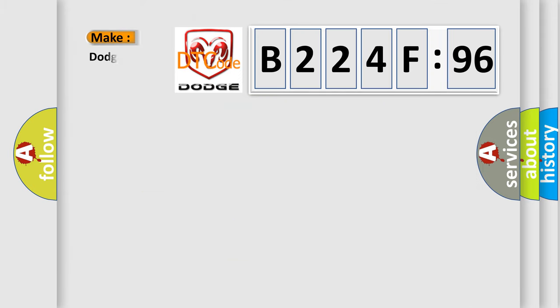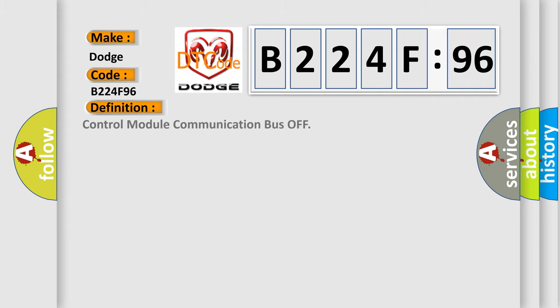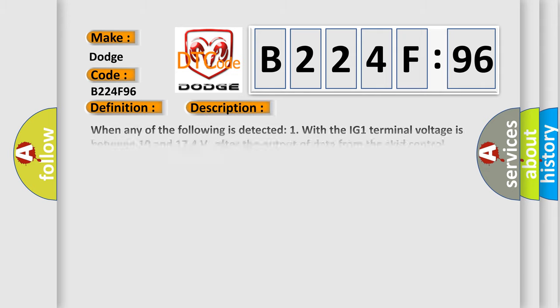So, what does the diagnostic trouble code B224F96 interpret specifically for Dodge car manufacturers? The basic definition is: control module communication bus off. And now this is a short description of this DTC code.